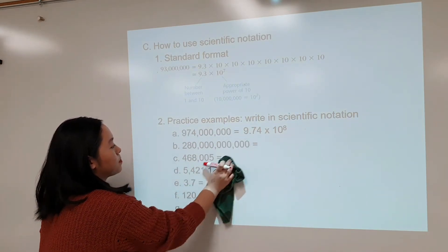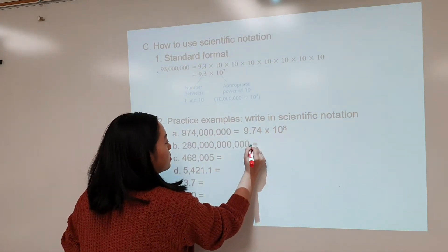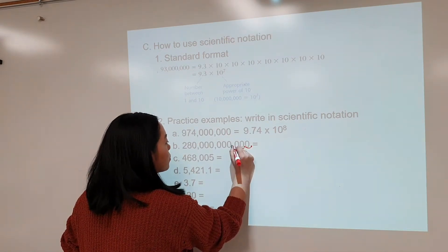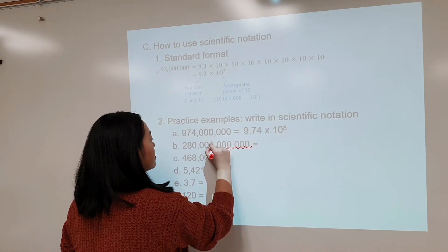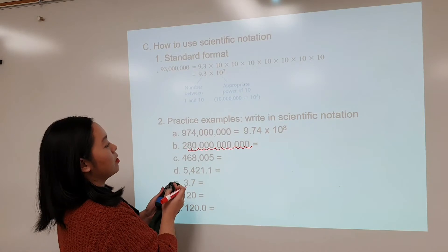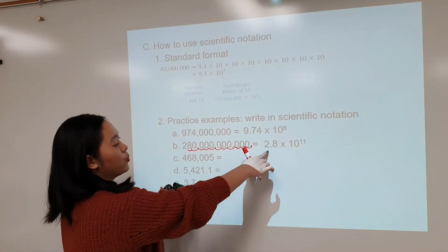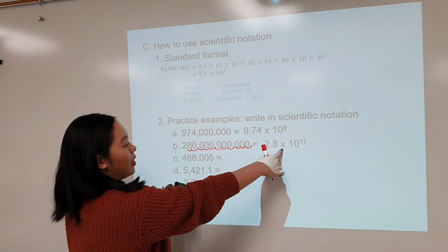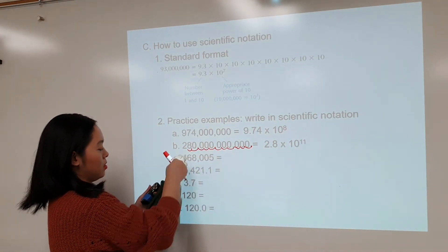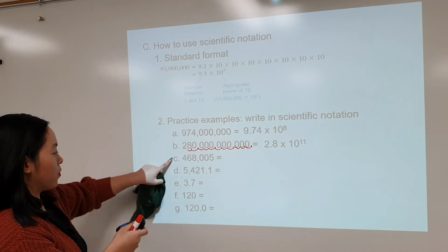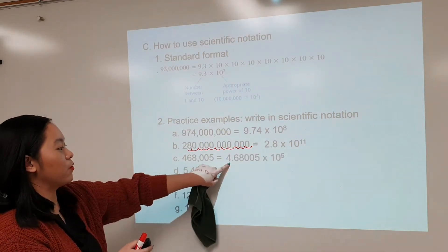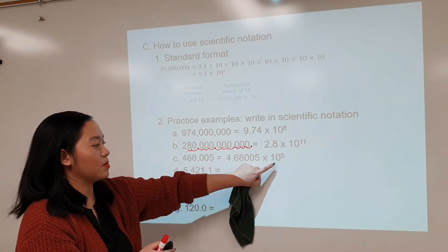Next example — same thing. Invisible decimal at the very end. Moving it 11 places over gives us 2.8, so the answer is 2.8 times 10 to the 11th, because we moved 11 places. Then we do the same process for the rest of the examples, giving us 4.68005 times 10 to the 5th.